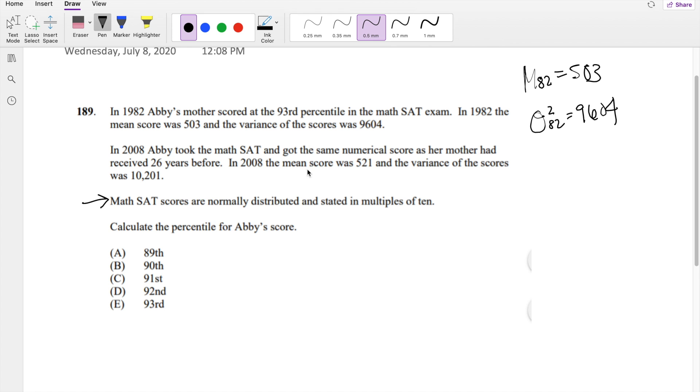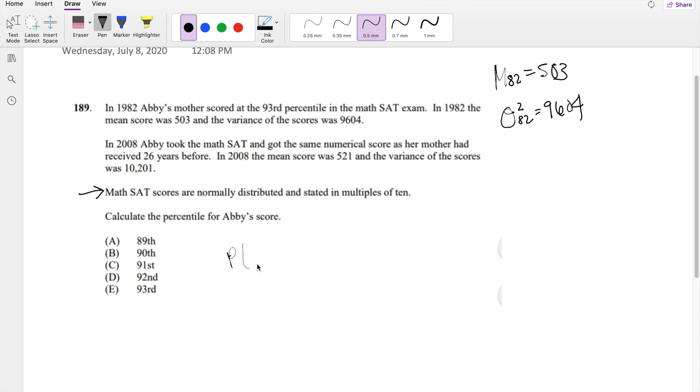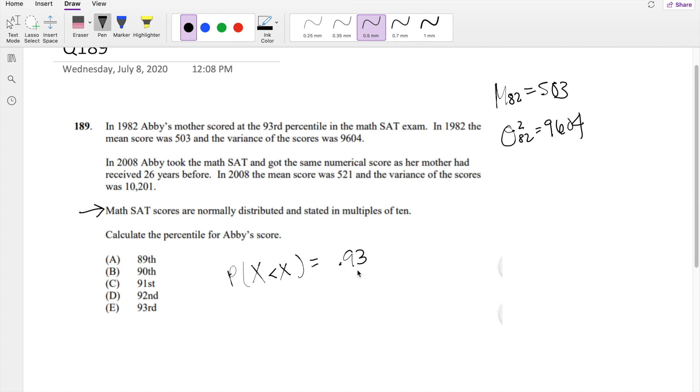Let's find what her mom's score was. Alright, so when her mom took the exam, she got x is less than little x equals 93rd percentile. So we're going to normalize this because we know this is normally distributed. So then that's probability of x minus mean over standard deviation is less than x minus mean...